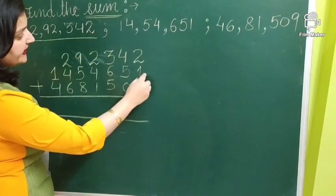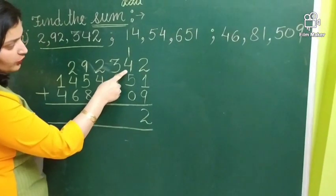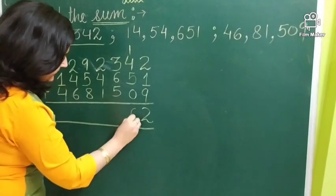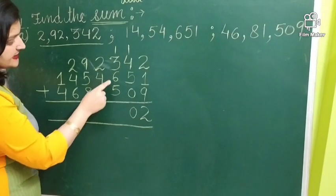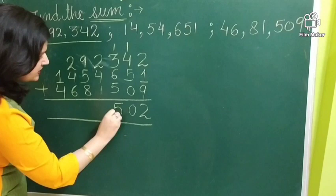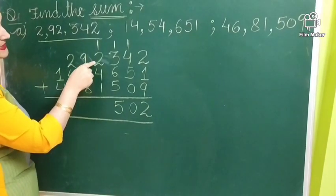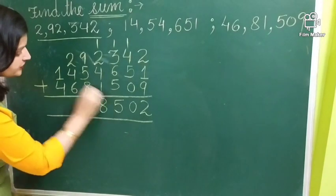So, how we will add? 9 plus 1, 10 plus 2, 12. 1 carry. 5 plus 4, 9 plus 1, 10. 1 carry. 6 plus 5, 11. Plus 3, 14 plus 1, 15. 1 carry. Now, again add. 1 plus 4, 5 plus 2, 7 plus 1, 8. No carry.